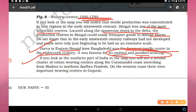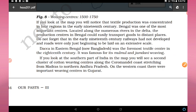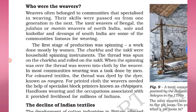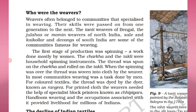Looking at the southern part of the map, there is a second cluster of cotton weaving centers along the Coromandel Coast — the Tamil Nadu coast — stretching from Madras to northern Andhra Pradesh. The Kerala coast is known as the Malabar Coast. On the western coast, there were important weaving centers in Gujarat.